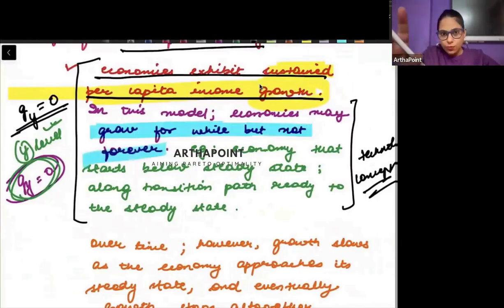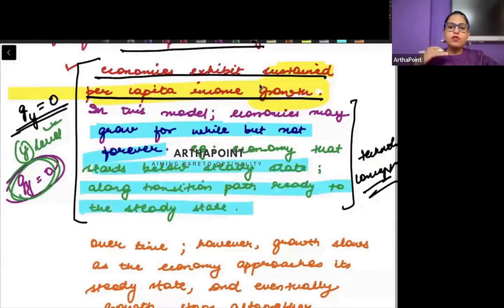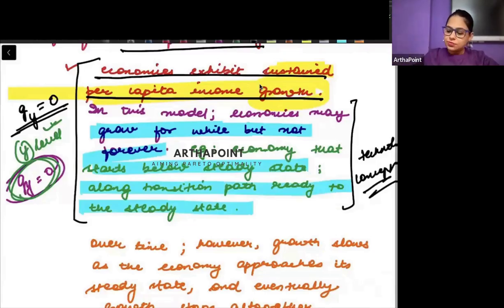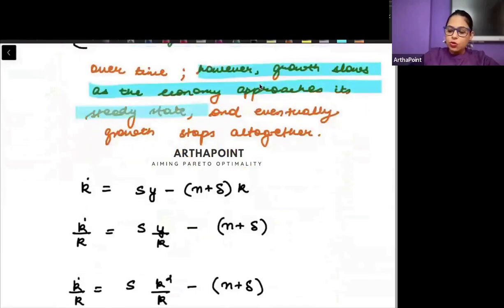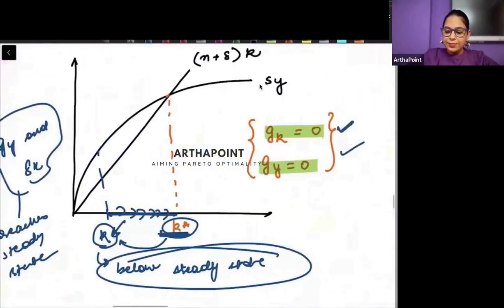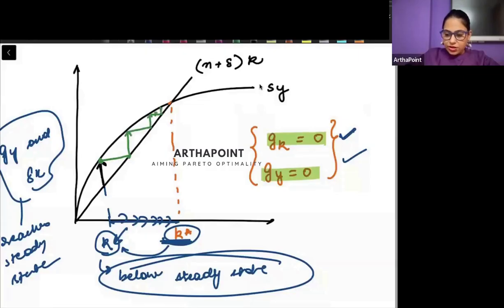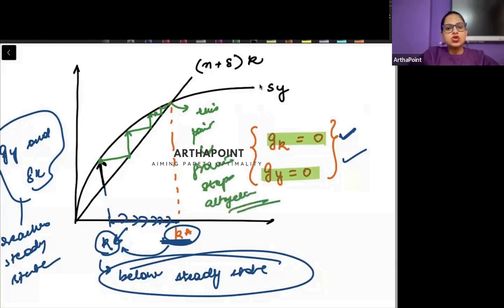Once the steady state is reached, the economy will not grow. But if the economy starts below the steady state, then along the transition path it should be moving towards the steady state. Over time, however, growth slows as the economy approaches its steady state, and eventually growth stops forever. For example, if the economy is far below, it has a big gap to cover and must grow at a very high rate. As it covers that gap, the remaining gap becomes lesser and lesser until it reaches the steady state, where growth stops altogether.